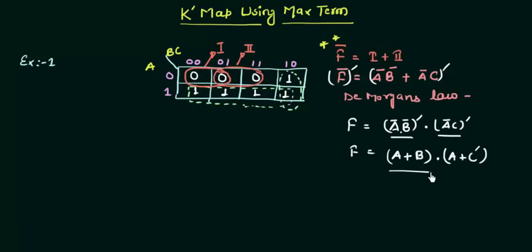So as you can remember, this thing is your POS form. This is product of the sums. There are two sums: A + B, A + C complement, and we are writing it as a product. Actually, this is the name given, but actually there is nothing like the sum and nothing like the product. It is just a different representation. It looked like our mathematical sum and then its product, but actually it's all OR operator and this is AND operator. So this is how we can get our function by using the zeros, and this is called as K-map using max term.